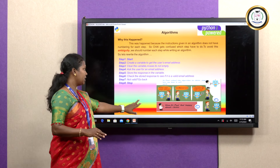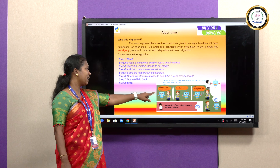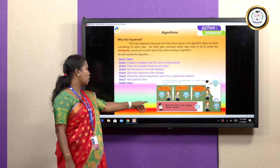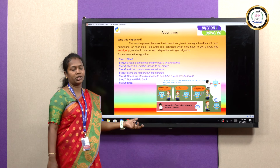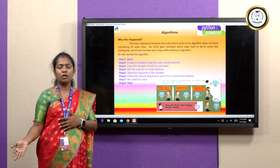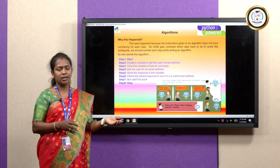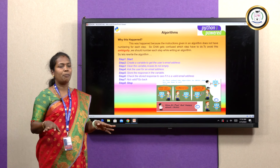Seeing the diagrammatical representation: Dr. Paul refed the algorithm to Chitty. Now let's see how it works. Chitty says: 'Enter your email address.' Tom enters tom@gmail.com. Check the response for valid email — yes, it is valid. Now Dr. Paul feels happy about Chitty. If you give instructions correctly, it will produce proper output. If you do not give it correctly, you will not get proper output.